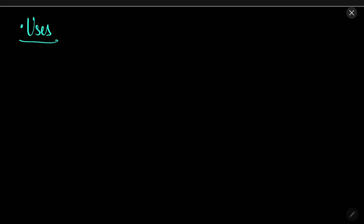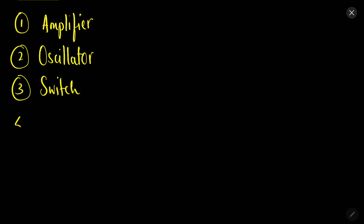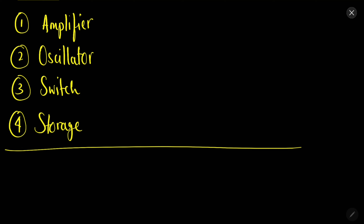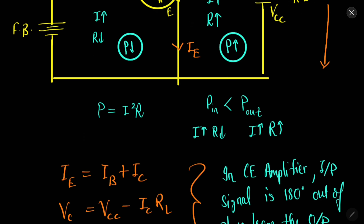The uses of the transistor include: it is used as an amplifier, it can be used as an oscillator, it is used as a switch, and it is used for memory storage. There are multiple applications of the transistor, and in different configurations you can operate it to obtain the desirable application.